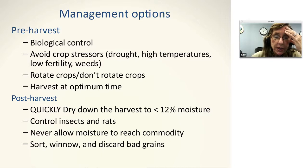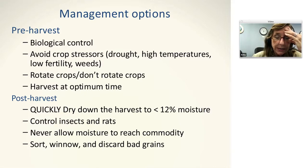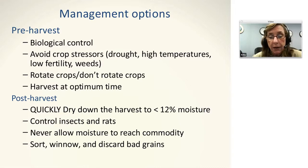You have to quickly dry the harvest down to less than 12% moisture and keep it there. You've got to control insects and rats in the store — insects will drive up humidity again by feeding and breathing. You can never allow moisture to reach the commodity once it's dried down; otherwise the grain will re-imbibe and the fungus will start producing toxin again. Right at the point of consumption, you can sort and winnow and discard bad grains. In research, I found you could reduce toxin levels by 60% just by cleaning out the bad grain.